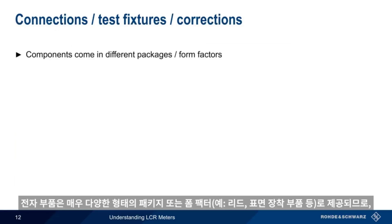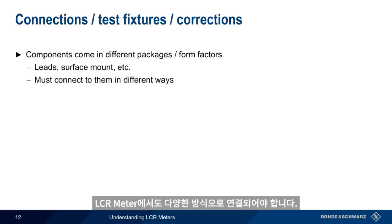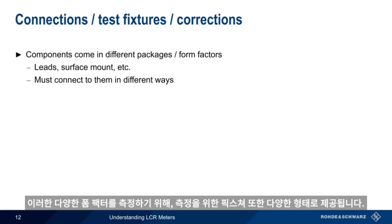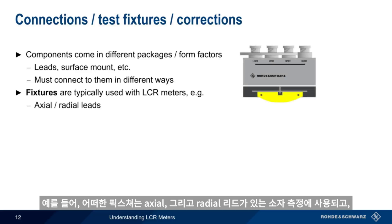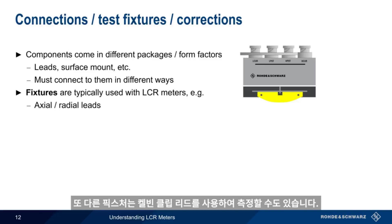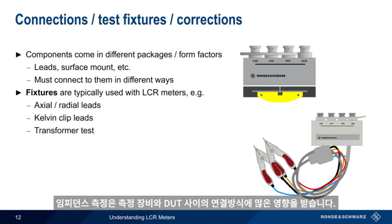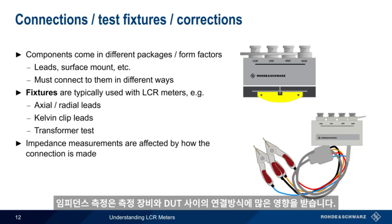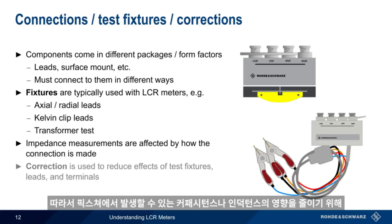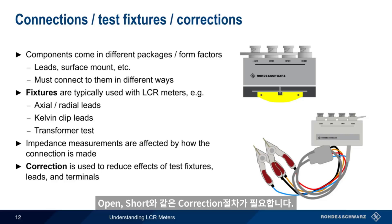Electronic components come in a wide variety of packages or form factors — for example, those with leads, surface mount components, etc. — and therefore an LCR meter must be connected to them in different ways using different types of fixtures. One type is used for components with axial or radial leads, another common type uses Kelvin clip leads, and special fixtures are also used when measuring transformers. It's important to remember that impedance measurements are affected by the connection, so correction routines — usually performed using an open and a short — are used to reduce the effect of stray capacitances, inductances, and resistances in the test fixtures, leads, and terminals.